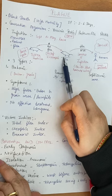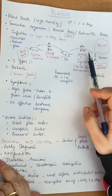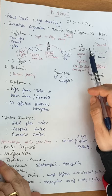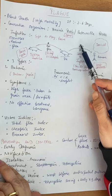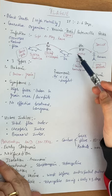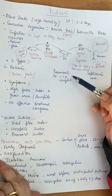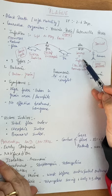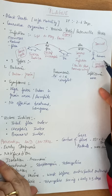When the rat dies, the rat flea bites another human. The flea bite is the source of infection because Yersinia pestis bacilli block the proventriculus of the rat flea. Unable to feed properly, it becomes very hungry — this is called the 'blocked flea' — and it then bites whatever host it can find, including humans.